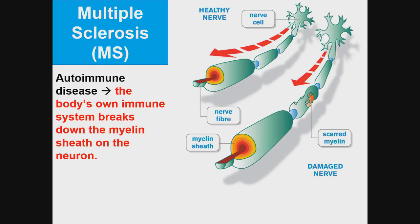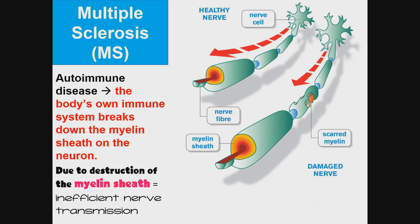MS is an autoimmune disease in which the body's own immune system breaks down the myelin sheath on the neuron. Due to destruction of the myelin sheath, there is inefficient nerve transmission. Here we see a healthy nerve where transmission occurs through the entire length of the axon, versus the damaged nerve where it stops at the point of scarred myelin.